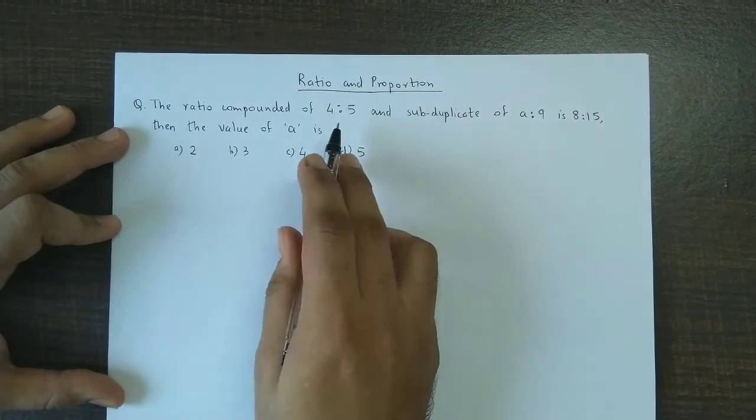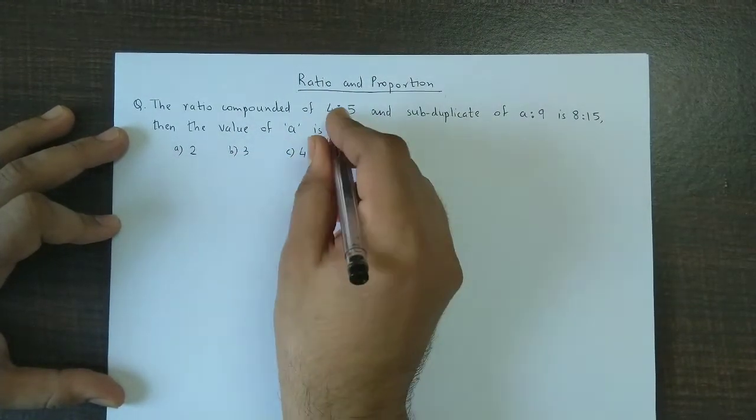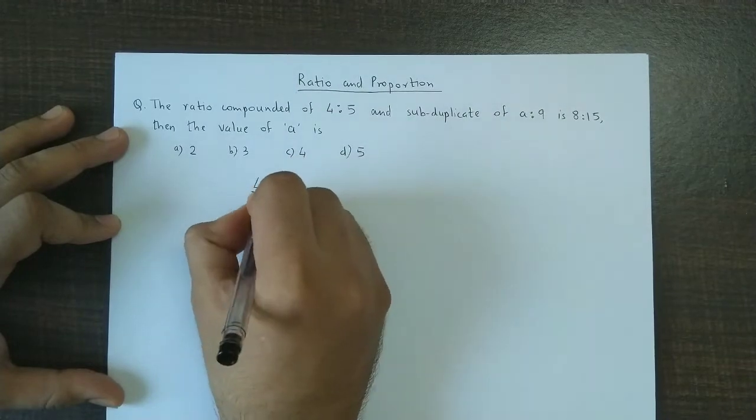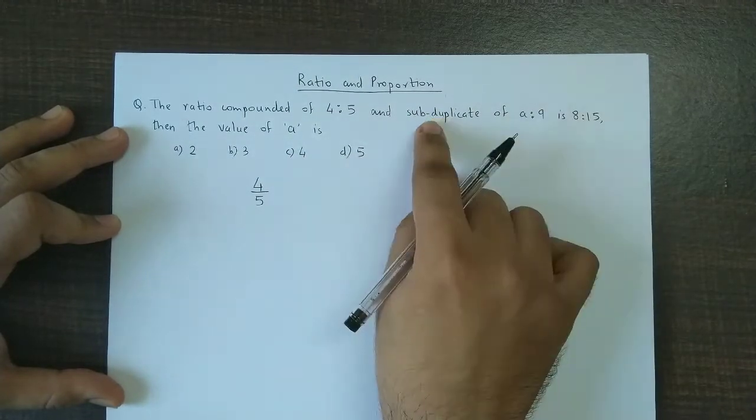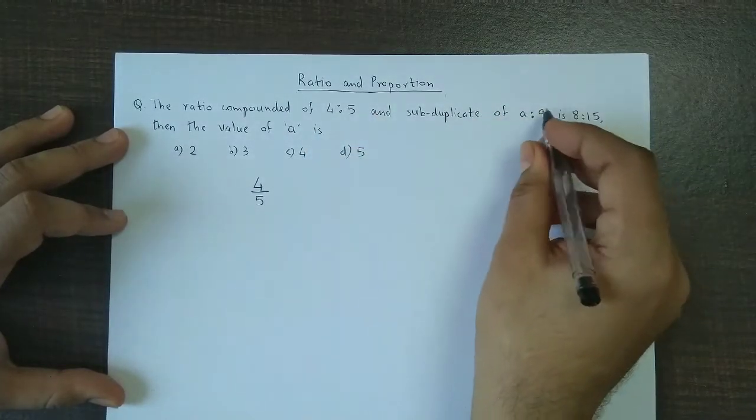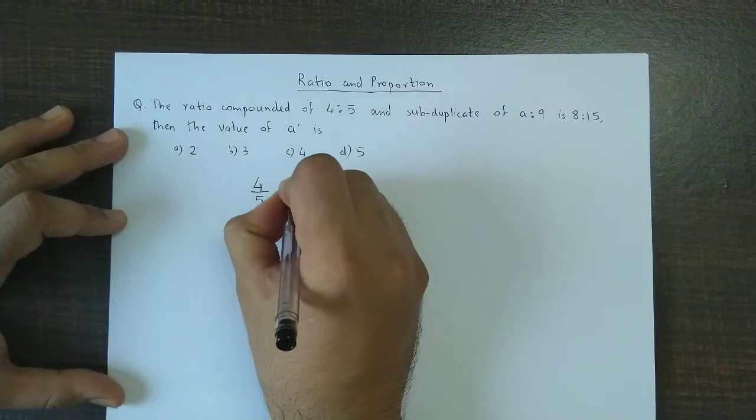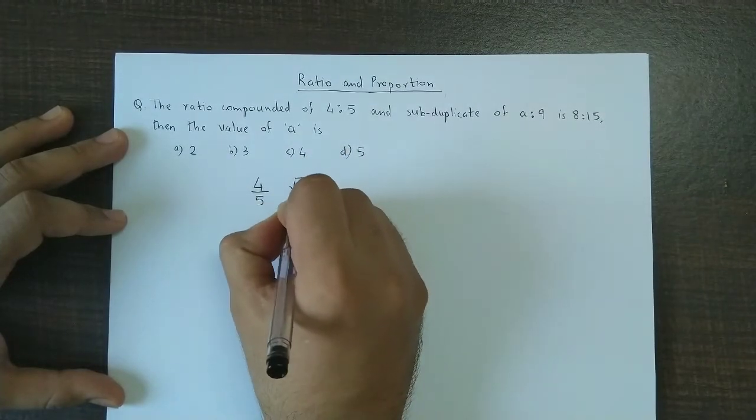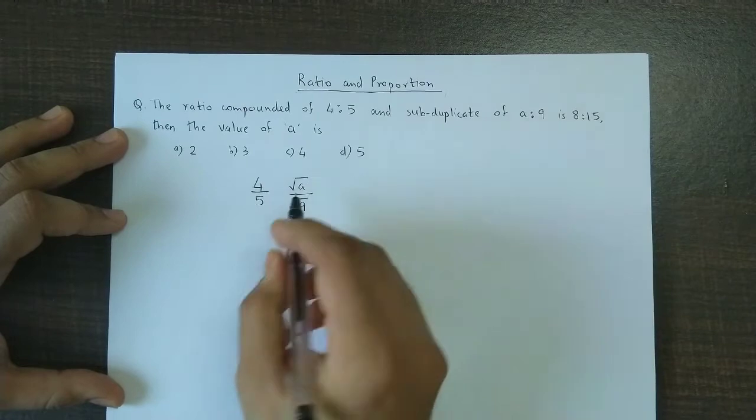We have to find the compound ratio of 4:5 and subduplicate of a:9. For subduplicate, we take the square root, so that is √a upon √9.